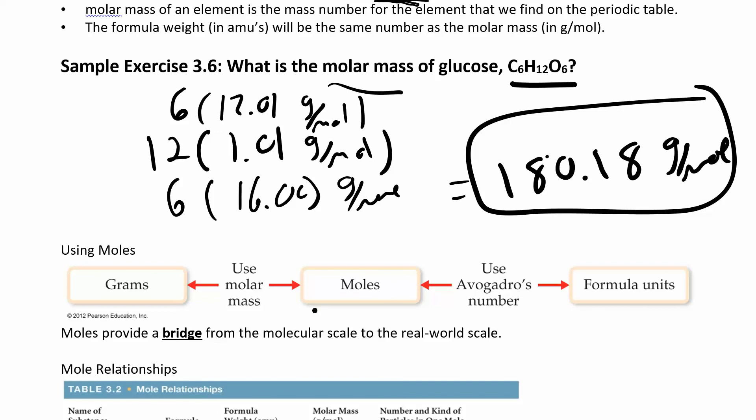So you can go from grams to moles using molar mass. Moles to formula units or atoms using Avogadro's number. And the molar mass is kind of like the bridge between the molecular scale and the real world.